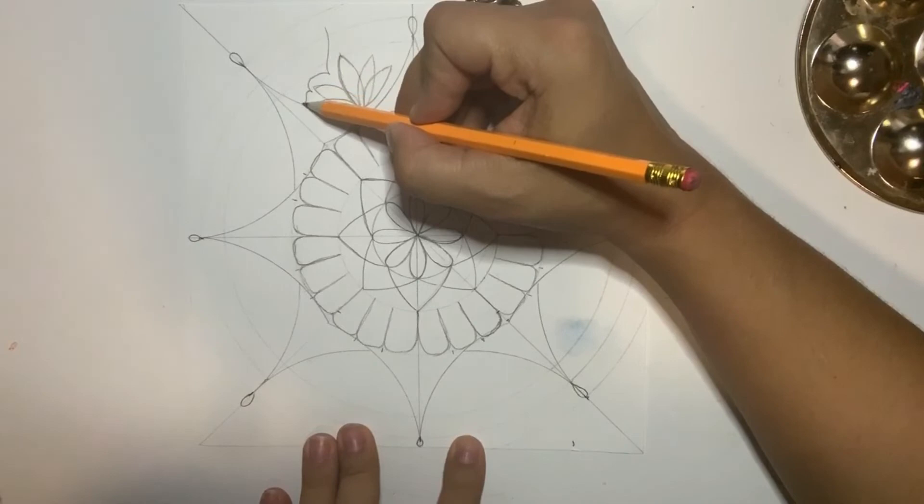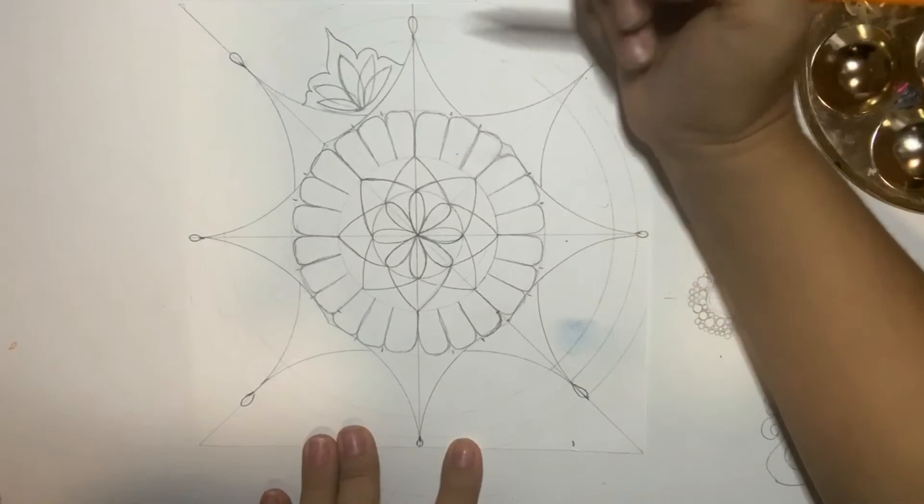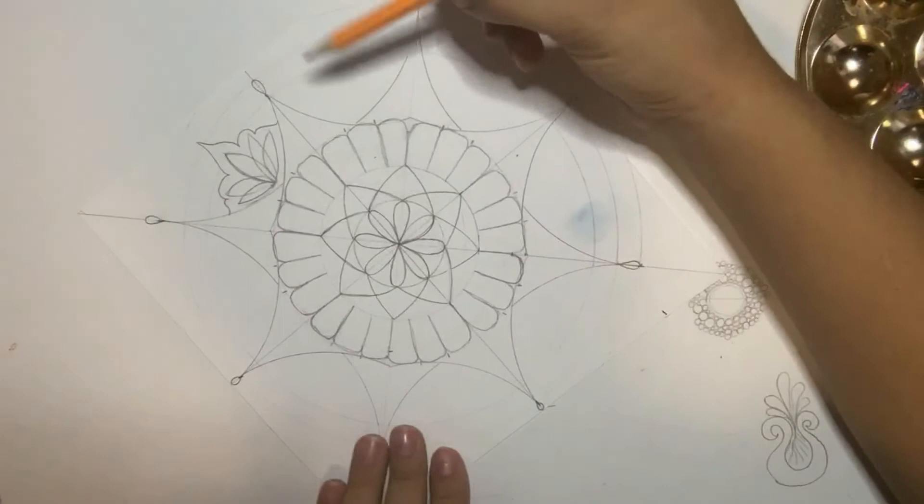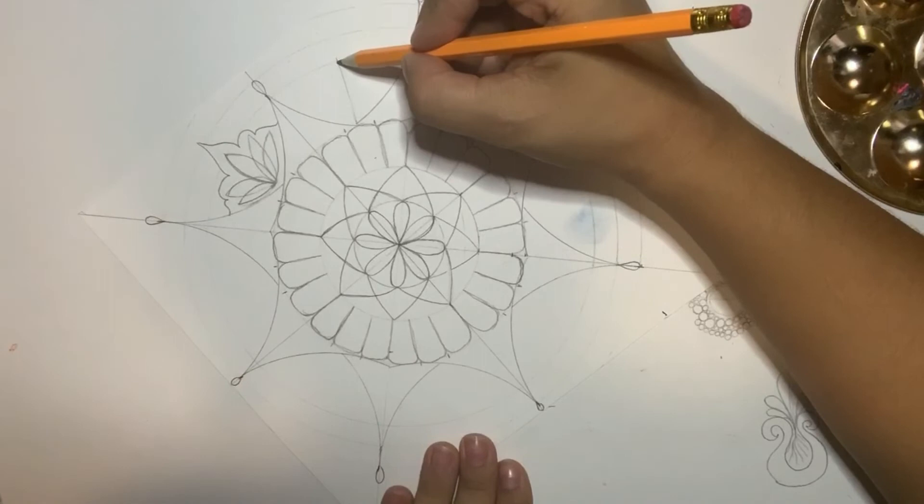And then on top of that I'm gonna make like an Indian window that looks beautiful. And I'm gonna repeat that in all the gap spaces that I have here.